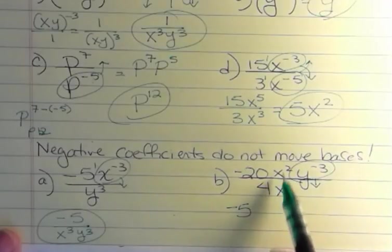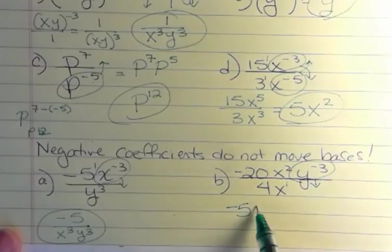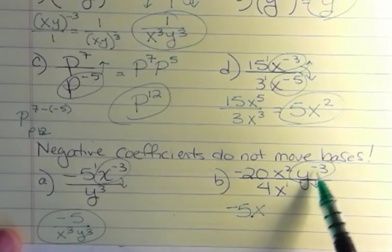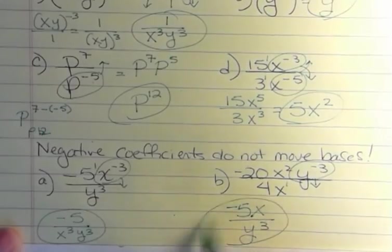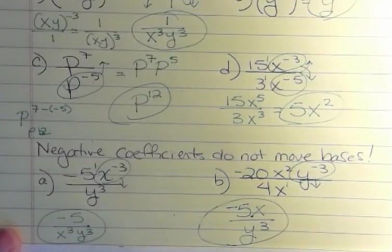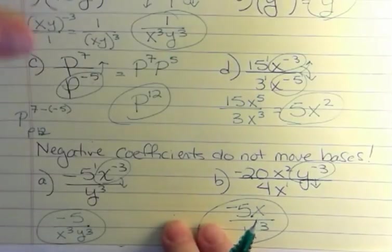And then I have, where do I have more x's? Well, I have more on top. This is like 2 minus 1, so I have one extra x on top. Y to the negative 3 drops down and becomes y to the positive 3. And that's my simplified version. So just be careful of that.